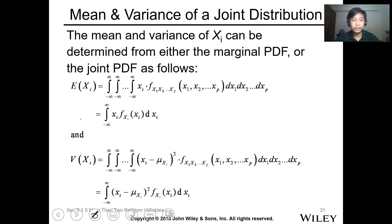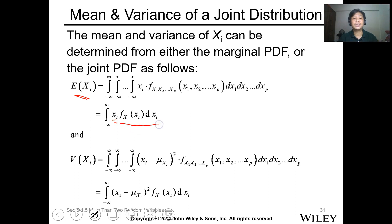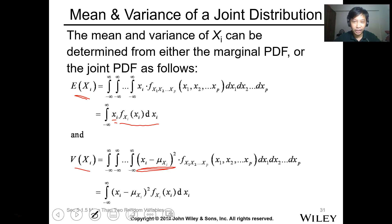For the mean and variance of a joint distribution, the approach is the same: multiply xi by its marginal f_{Xi}(xi) and integrate for the expected value. For variance, multiply accordingly. With multiple variables, you can apply this calculation to each variable individually.